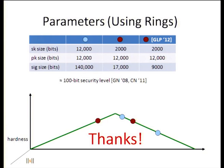Q: Can you remove random oracles and still get efficiency? For lattices this would be a really interesting problem. In number-theoretic constructions you can get almost the same efficiency — maybe twice as inefficient. For lattices it looks really, really difficult. I don't think there's been any work that came close to getting parameters this size without random oracles. The signatures of Boyen are the best known ones without random oracles, and they're much, much worse.